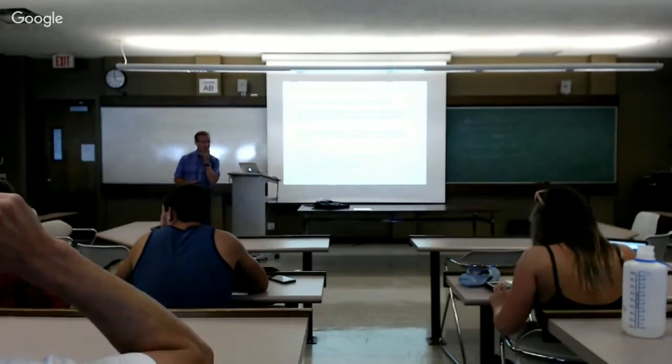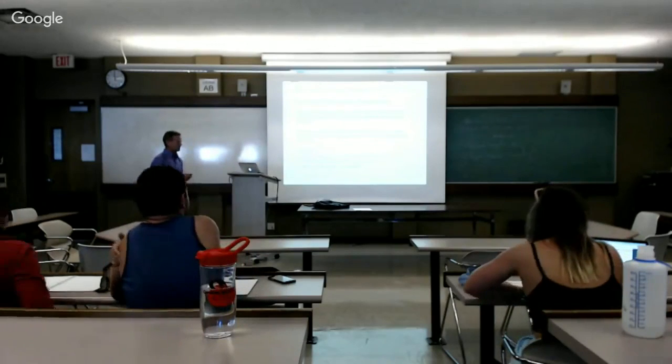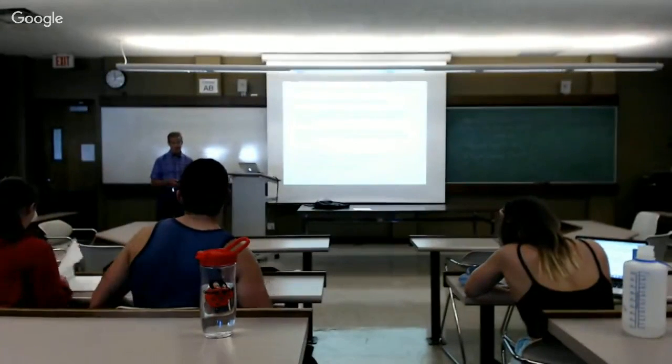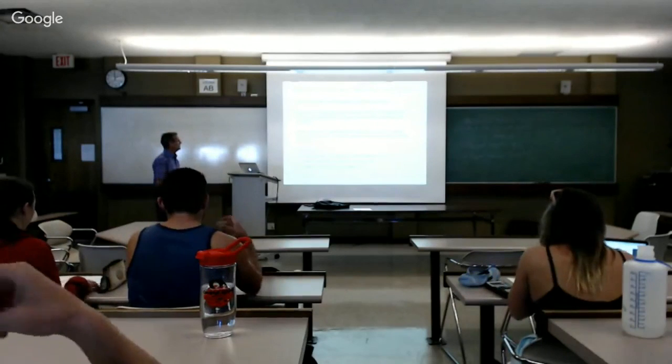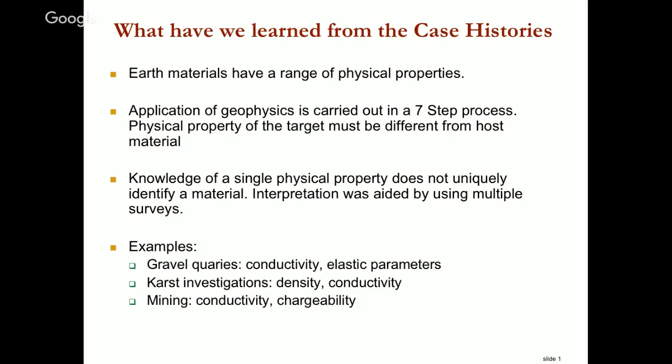To recap from the team-based learning and that previous case history: Earth is made up of and can be characterized by a range of physical properties. You looked at about five of them during that case history with the tour around Ireland, which gives you some essence about geophysics. Different problems are really associated with different physical properties, and singling that out and then carrying out the proper experiment can help you solve the problem.